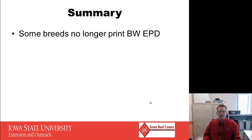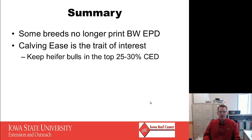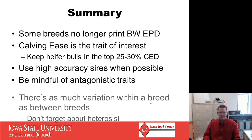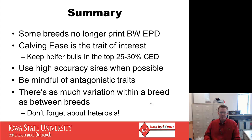In summary, some breeds no longer print birth weight EPD because calving ease direct is a better indicator. When searching for heifer bulls, try to keep them in the top 25 to 30 percent for calving ease direct EPD — or even better. Use high-accuracy sires when possible; an AI program is one way to do that. Be mindful of antagonistic traits. Also, there is as much variation within a breed as between breeds, so don't forget about heterosis — it's the only free lunch in the cattle business. Getting those calves on the ground is good, and using a bull that offers heterosis adds even more value.